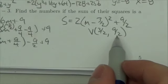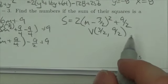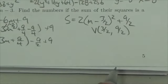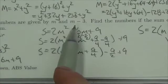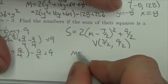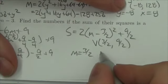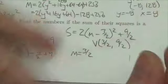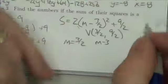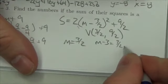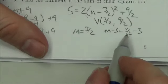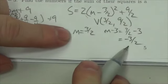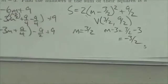Now the 9 halves represents the minimum sum. This first term is the m coordinate. Remember the two values are m and m minus 3, so m equals 3 halves. The other one is m minus 3 equals 3 halves minus 3, which is negative 3 halves. So the two numbers we're looking for are 3 halves and negative 3 halves.